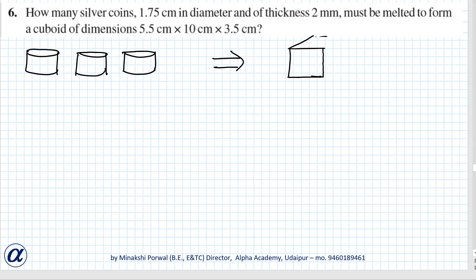Okay, so dimension of cuboid are given that is equal to 10 x 5.5 x 3.5, and diameter of each silver coin is 1.75 centimeter and thickness is 2 mm or we can write in centimeter 0.2. Okay, so basically let n silver coins are melted.